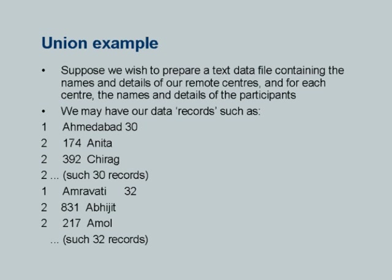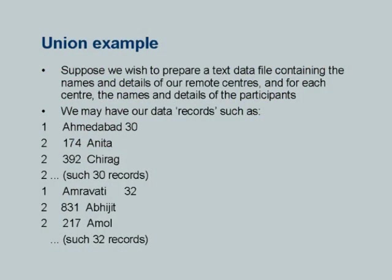Suppose we wish to prepare a text data file containing names and details of our remote centers, and for each center the names and details of participants. We have differing numbers of participants in different places. For example, Ahmedabad has 30 people — a record describes Ahmedabad as the center, 30 as the number of participants, and names like Anita and Chirag. Similarly, Amaravati with 32 participants would have 32 participant records plus one center record.